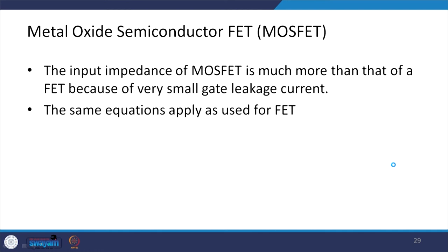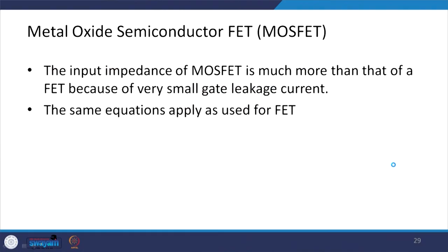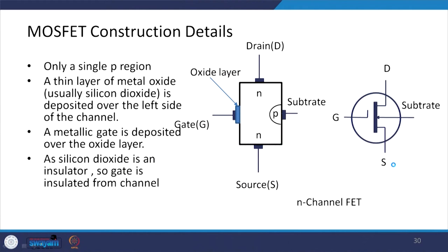Another important transistor is the metal oxide semiconductor FET, popularly known as MOSFET. The input impedance of the MOSFET is much higher than that of the FET because of very small gate leakage current, and the same equations that apply to FETs apply to MOSFETs. In MOSFET construction, there is a source, a drain, and instead of two PN junctions, only one PN junction is present. The other junction is replaced by a metal oxide layer — usually silicon dioxide.